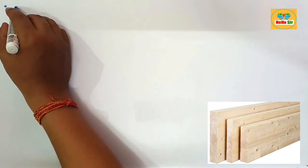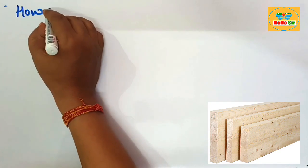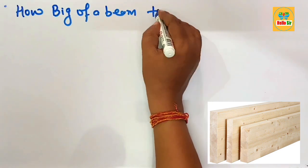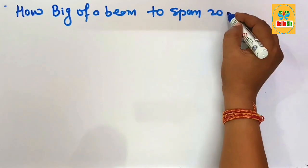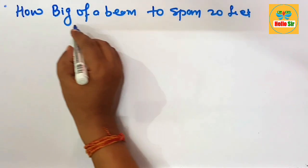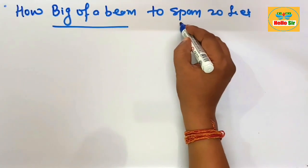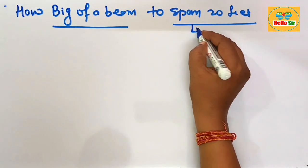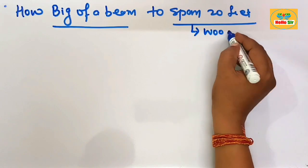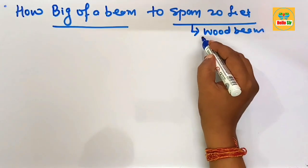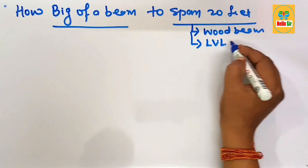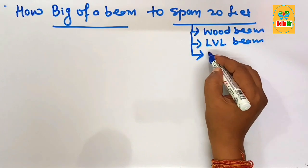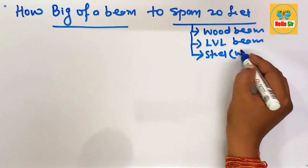Today we'll look at how big of a beam you need to span a 20-foot length. We'll find out the wood beam size, the LVL (laminated veneer lumber) beam size required to span 20 feet, and the steel beam — also known as a W-beam — required to span 20 feet.